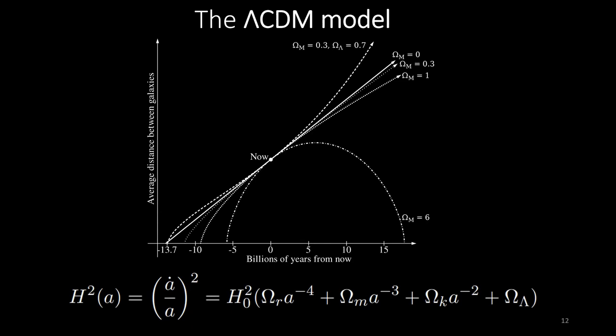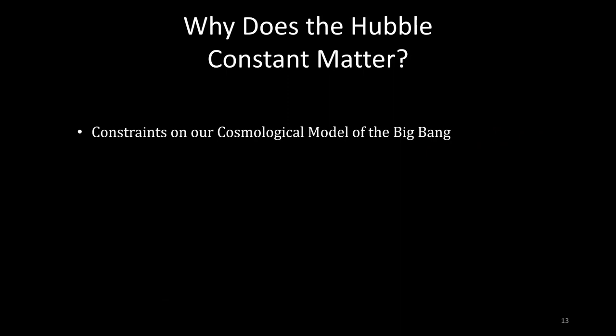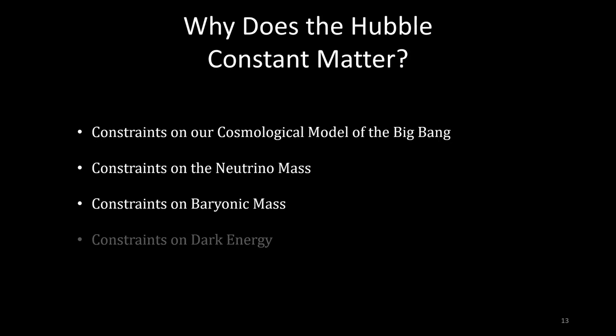Within the framework of the Lambda CDM model, solving the FLRW metric yields a universe whose age is close to 13.8 billion years old — an expanding universe dominated by radiation in its early lifetime, then by matter, and now by dark energy. The evolution of the scale of the universe is directly tied to the Hubble constant, meaning we can use the Hubble constant to constrain our cosmological model of the Big Bang beginning of the universe. These measurements can also constrain the mass of weakly interacting particles like neutrinos, the total amount of baryonic mass and dark energy, and the total curvature of our universe.